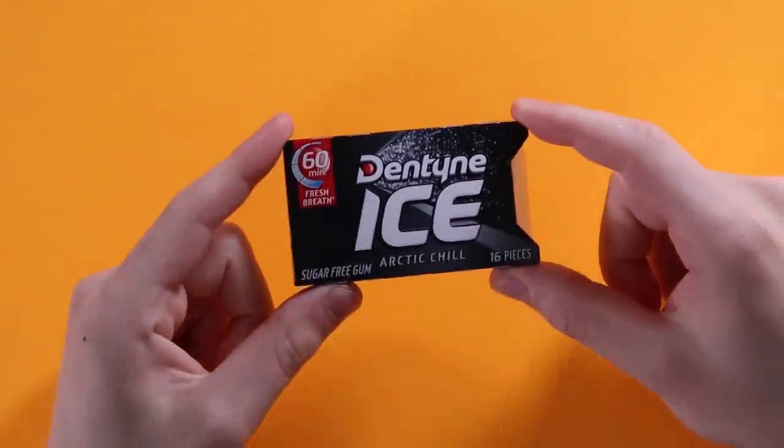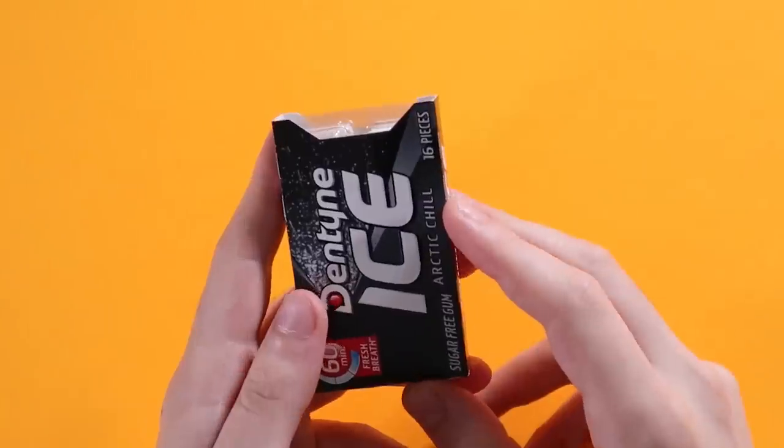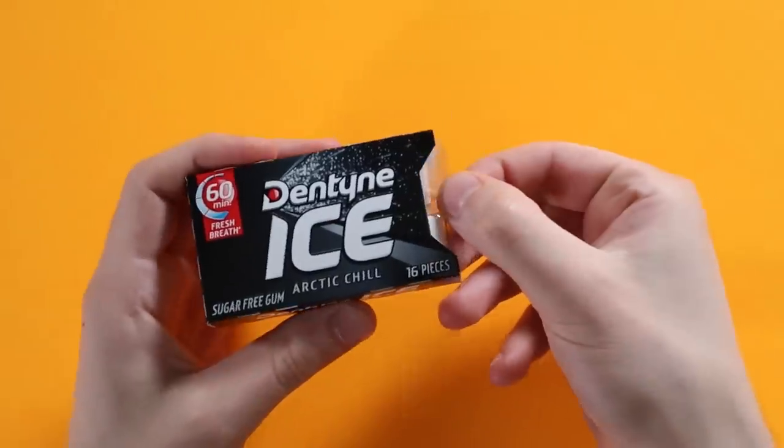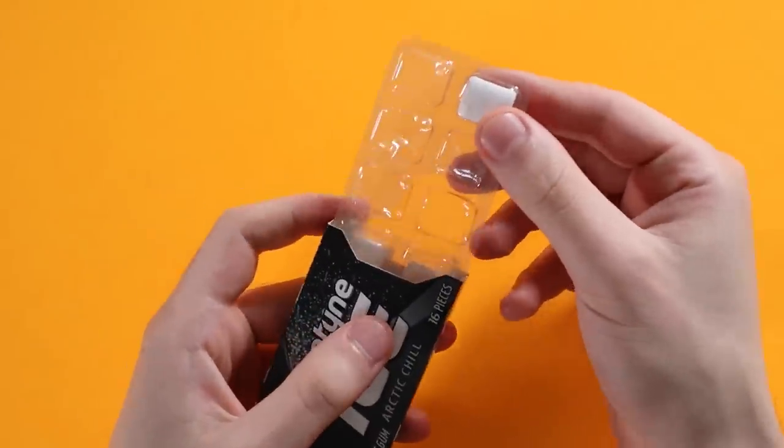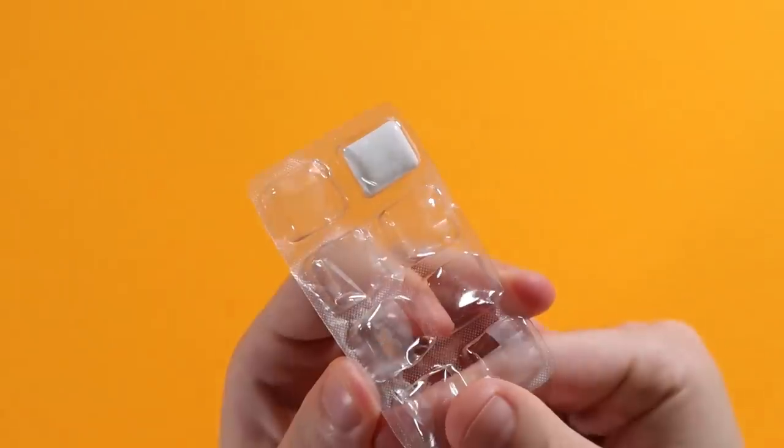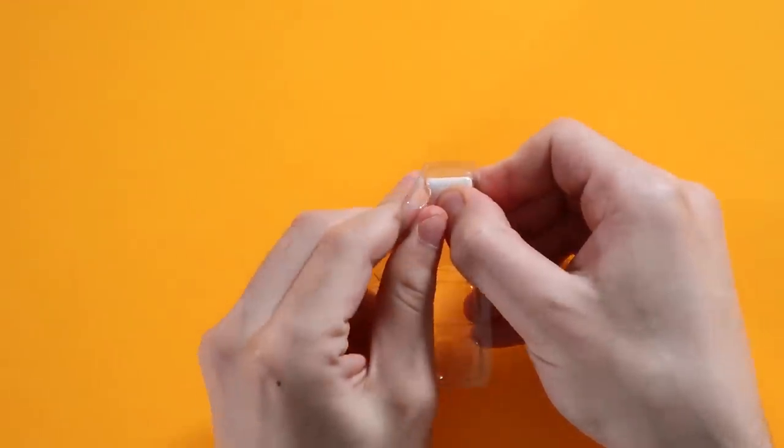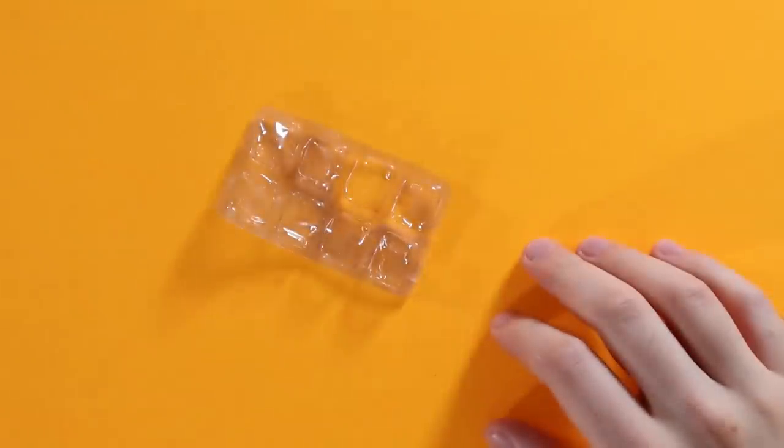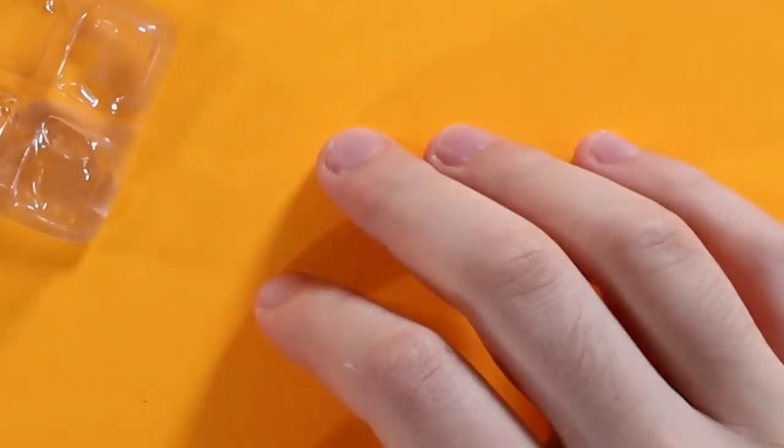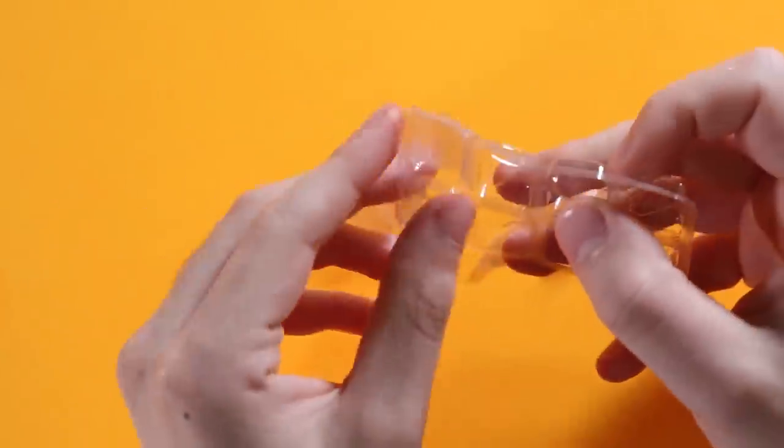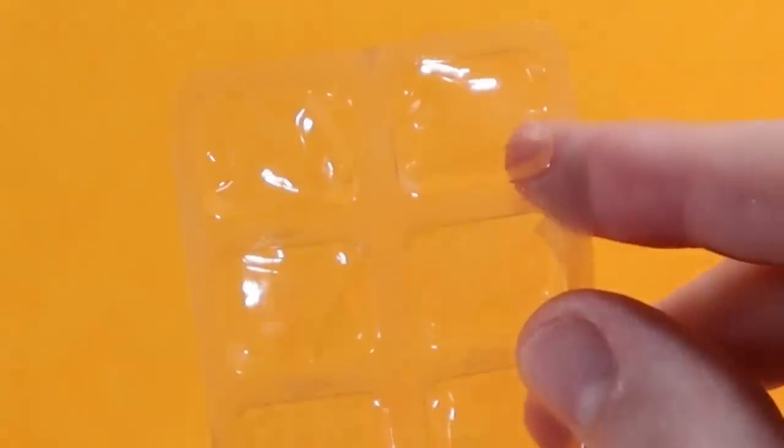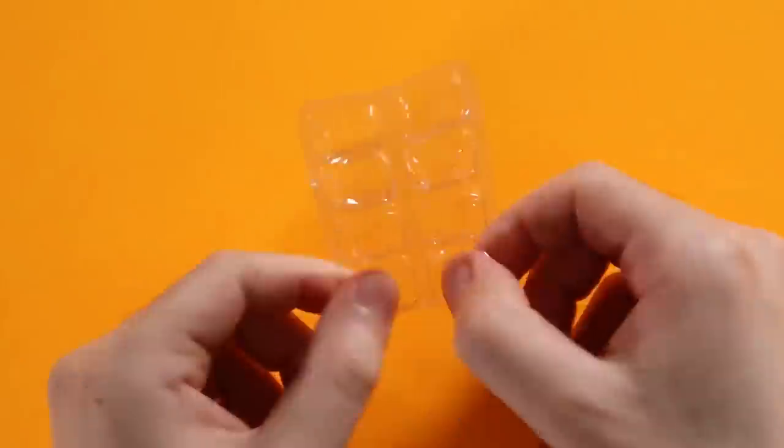For the first kind of poppit you'll need some gum or cough drops or whatever, as long as they come in this kind of packaging with the push out bubbly things. You want to eat all the gum. Minty fresh. And then there's this little plastic on the back. I just peeled that right off. All I care about is the bubbles. Nothing else matters.